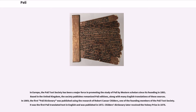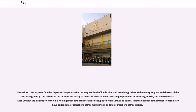In Europe, the Pali Text Society has been a major force in promoting the study of Pali by Western scholars since its founding in 1881. Based in the United Kingdom, the society publishes Romanized Pali editions along with many English translations. In 1869, the first Pali dictionary was published using the research of Robert Caesar Childers, one of the founding members of the Pali Text Society. It was the first Pali translated text in English, published in 1872. Childers' Dictionary later received the Volney Prize in 1876. The Pali Text Society was founded in part to compensate for the very low level of funds allocated to Indology in late 19th century England; institutions such as the Danish Royal Library have built up major collections of Pali manuscripts and major traditions of Pali studies.